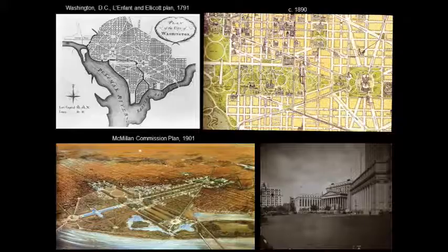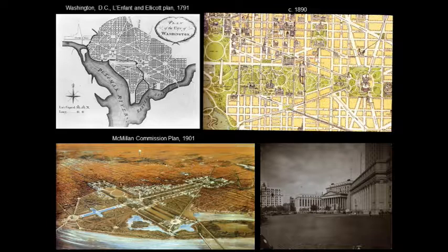Based on his success there, he was appointed by Senator McMillan of Illinois to lead a commission in 1901 to replan the Washington Mall and essentially restore the original plan. In the upper left, you see the original plan of Washington, D.C., 1791 — Bob mentioned the brief moment of the federal capital here in New York in the late 1780s, early 1790s, then Philadelphia, and then eventually settling on Washington, D.C. by 1791.